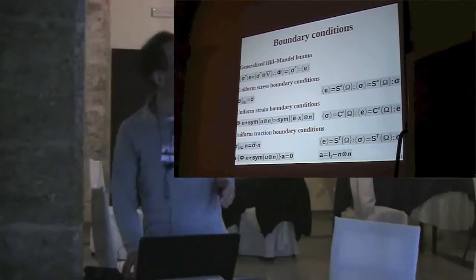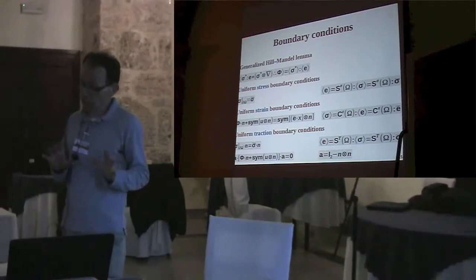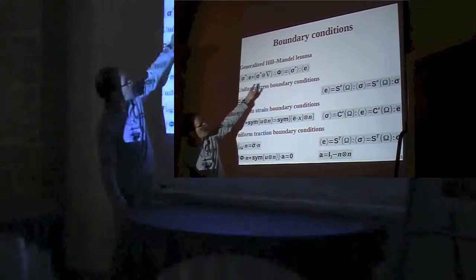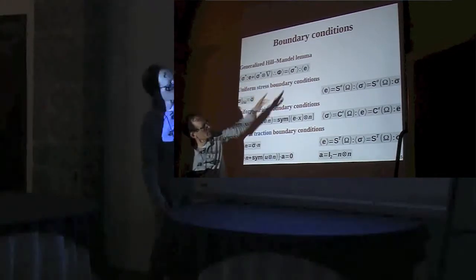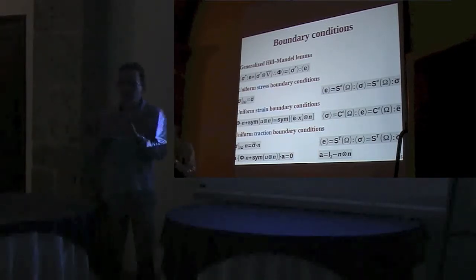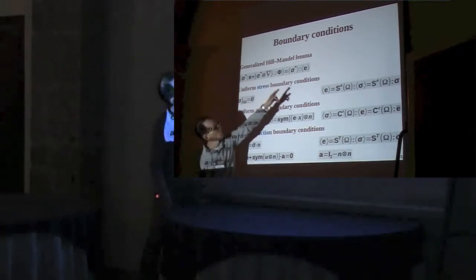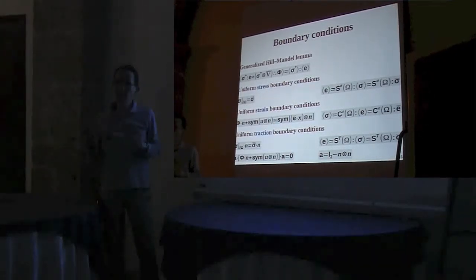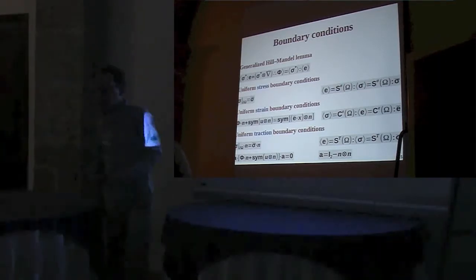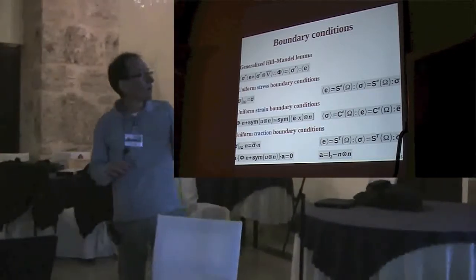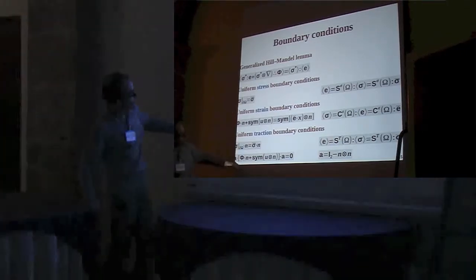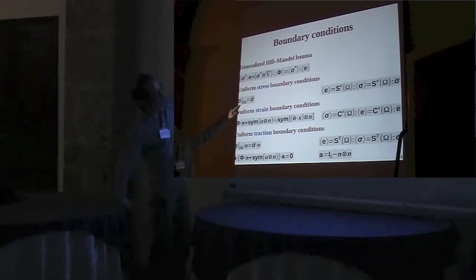The boundary conditions must fulfill the Hill-Mandel lemma. For stress gradient materials, the Hill-Mandel lemma is written with the internal power at the microscopic level on the left-hand side and the same quantity at the macroscopic level on the right-hand side. Since we expect a Cauchy material at the macroscopic level, there is no contribution of phi on the right-hand side. With the generalized Hill-Mandel lemma in hand, it is possible to formulate various boundary conditions that fulfill this lemma.